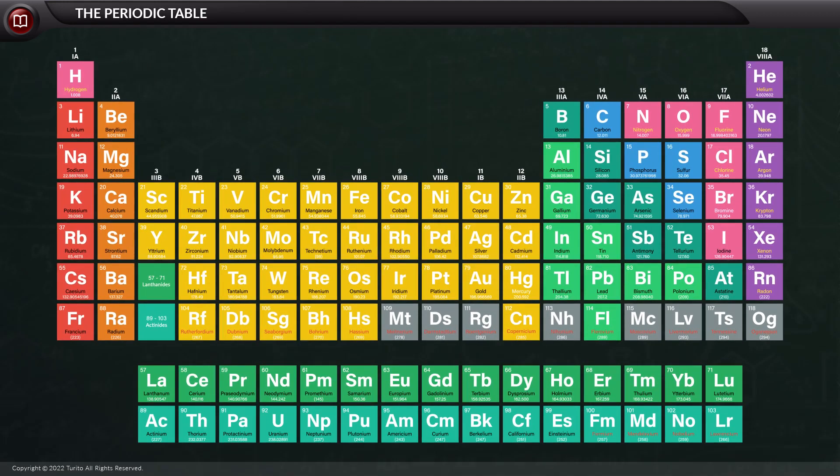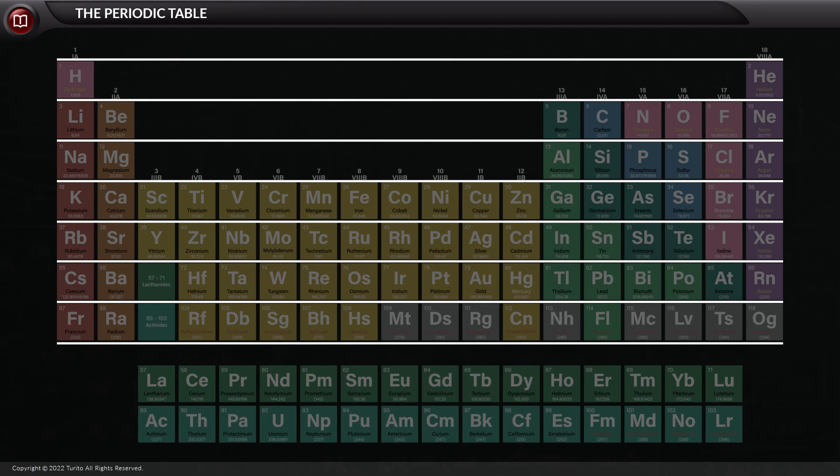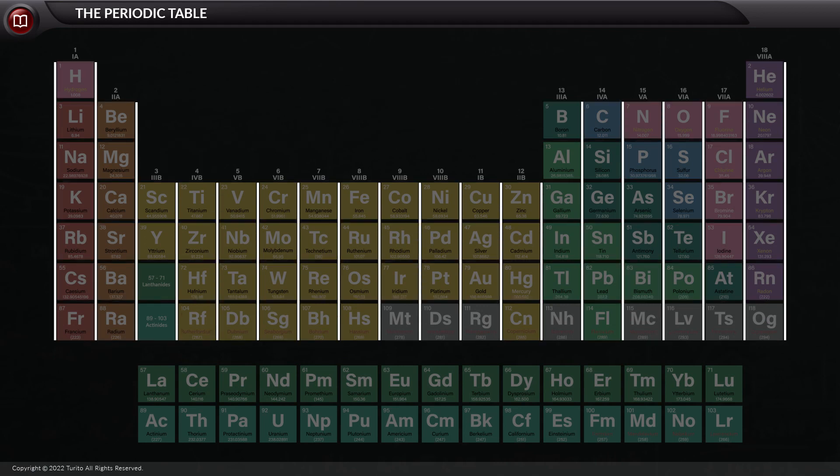Let us now have a look at the periodic table. The main body of the long form of the periodic table consists of 7 rows and 18 groups. The rows are called periods, and the columns are called groups.